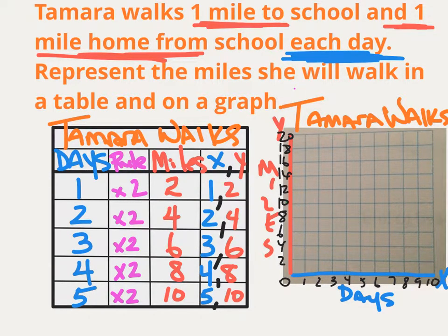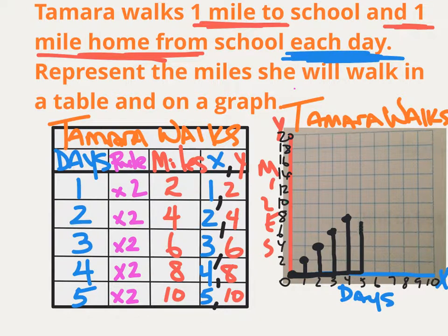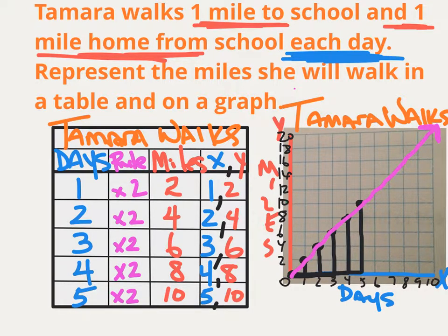I start at the origin to graph my data. On day one, I move along the X-axis to 1 and up to 2 for the two miles she walked. Back to the origin: day 2 is four miles, day 3 is six miles, day 4 is eight miles, day 5 is ten miles. Can you predict how many miles she would have walked by the end of the sixth day? If you said 12, you got it — this is a multiplicative relationship. Our line runs through the origin with an arrow at the end, representing how she'll continue to walk more and more miles each day.